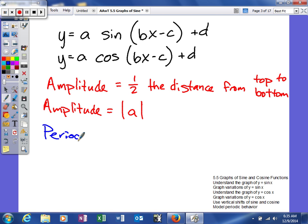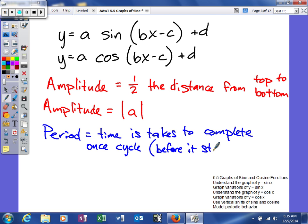Next we're going to talk about our period. It's basically the time it takes to complete one cycle, before it starts to repeat. And what we're going to do to find your period, you're going to take 2 pi and divide it by b.